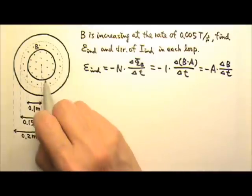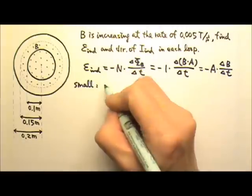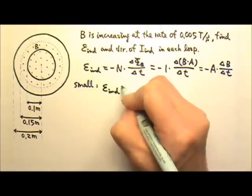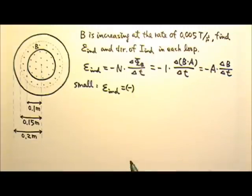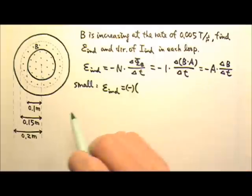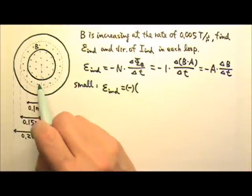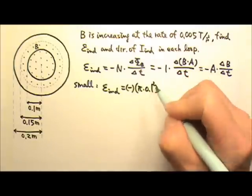Now let's look at the two loops separately. For the small loop, the induced EMF is negative. Remember the sign really is not important. So if you leave the sign out, that is okay. The area, for the small loop, the area would be pi R squared, pi times 0.1 squared.